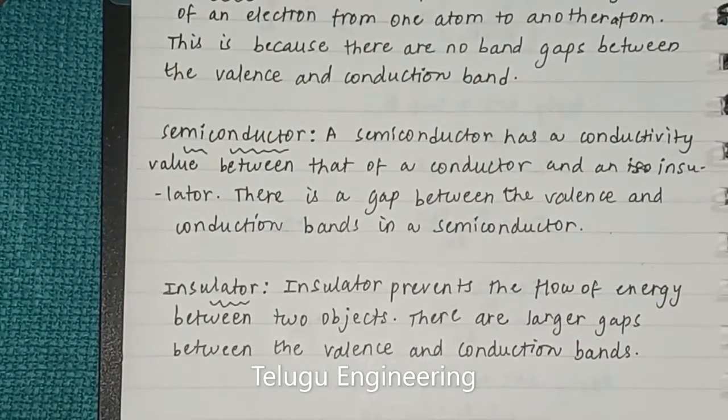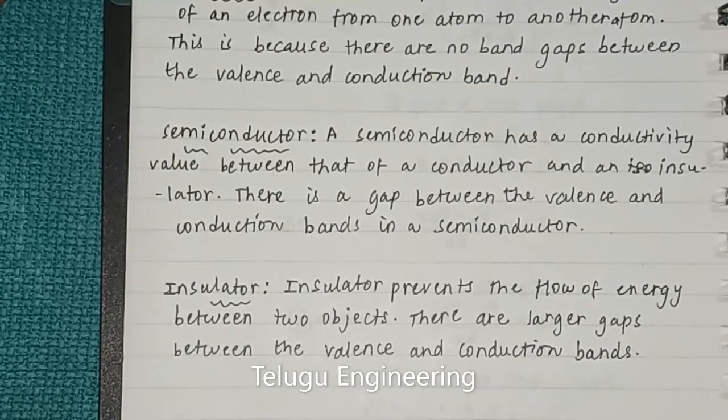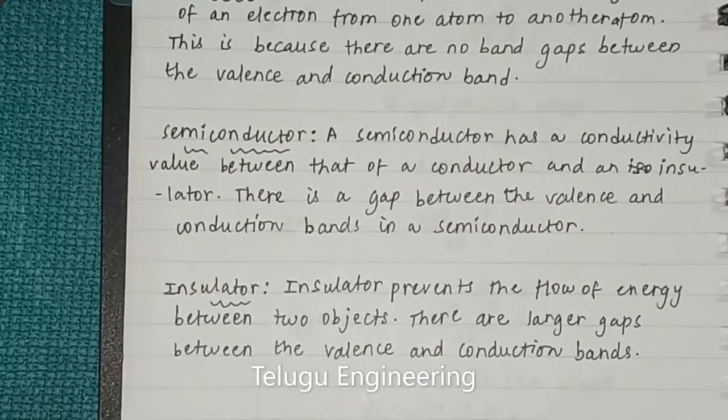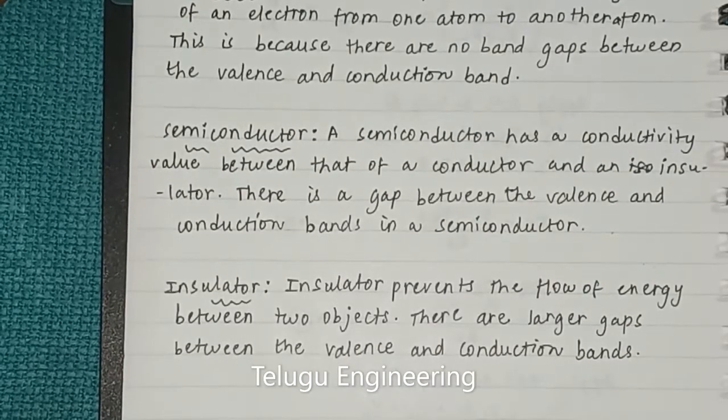In insulators, there are larger gaps between valence and conduction bands. The electrons cannot move into the conduction band, and this means the material cannot conduct.